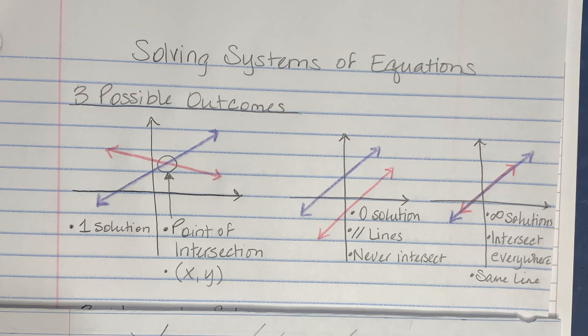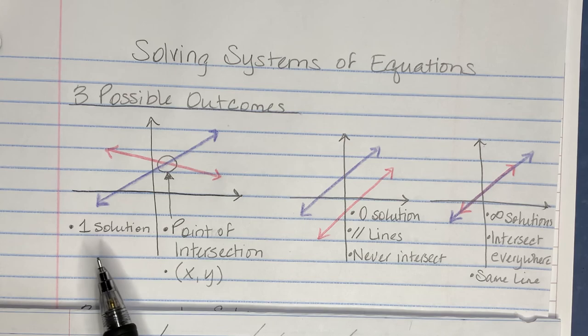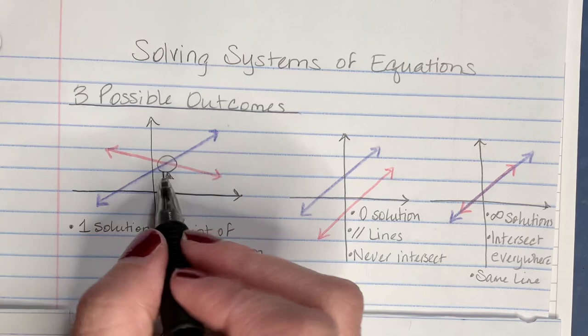The most common outcome is when they cross. Two lines are going to cross at a point of intersection, which we identify as the point (x, y). This means there is one solution to the system — the lines cross and intersect at exactly one point.